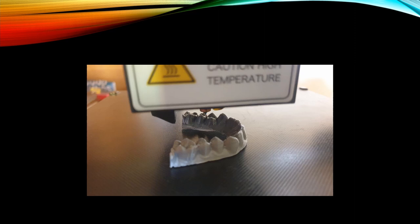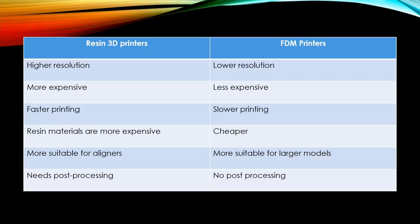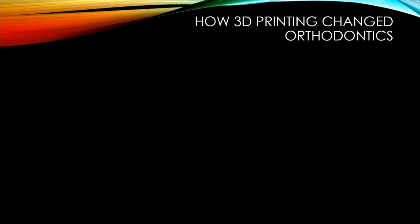A great advantage of FDM 3D printers is that models don't need any post-processing. However, FDM printers usually have lower resolution than resin printers. There are multiple differences between resin and FDM printers, and this table summarizes them. In my opinion they complement each other — some models are better printed with resin, while others, like surgical guides or a 3D printed mandible for surgical cases, are more suitable for FDM printers.